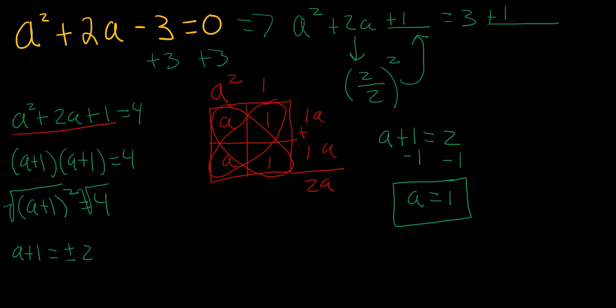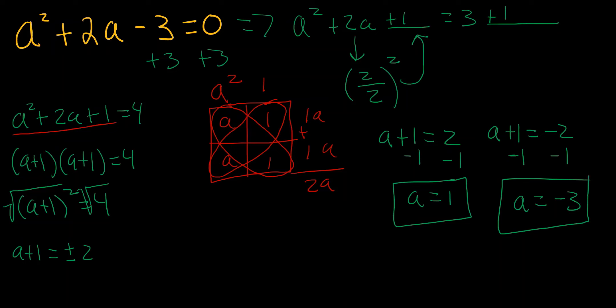We can also consider a + 1 = -2. If we subtract 1 from both sides, we get a = -3. So those are our two solutions: a = 1 and a = -3.